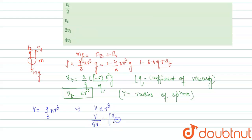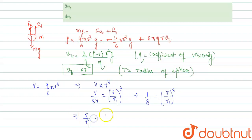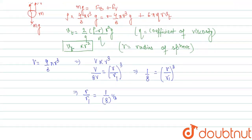Setting up the ratio: V / 8V = r³ / r1³, which gives 1/8 = (r / r1)³. Therefore r / r1 = (1/8)^(1/3) = 1/2, since the cube root of 8 is 2. From here, r1 = 2r, so the new radius is twice the original.